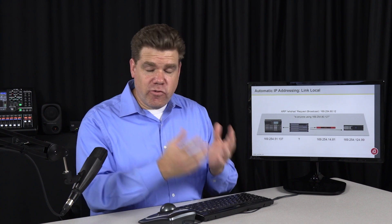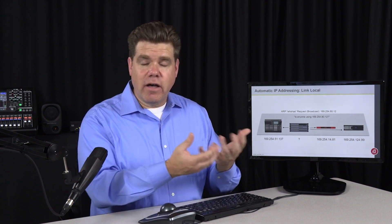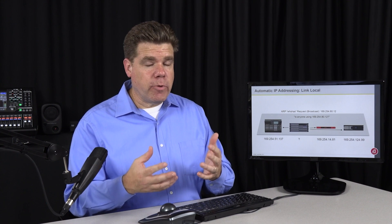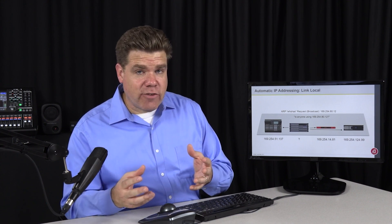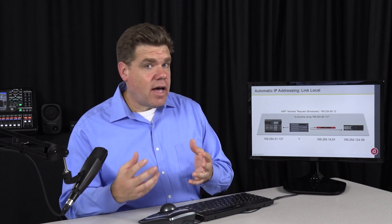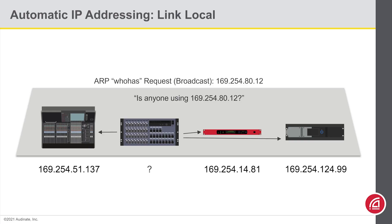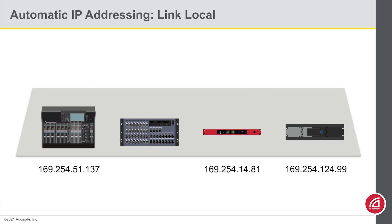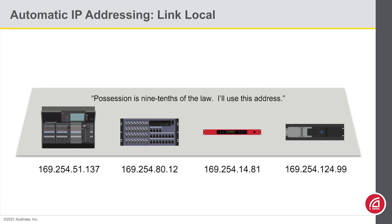This gets to an interesting point: if I send an ARP request and somebody is using that IP address, I'll get a response. But if I send an ARP request and nobody is using that address, I don't get a response. So we set a timeout value, at which point we say 'possession is nine-tenths of the law — I'm taking this address.' And that is how LinkLocal works.